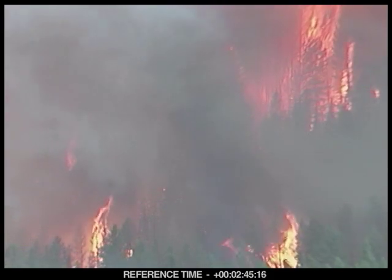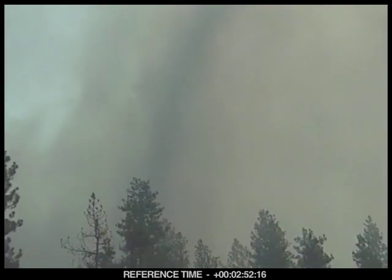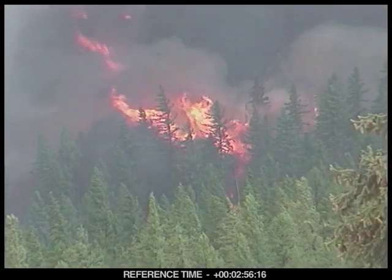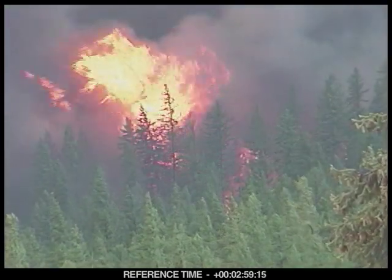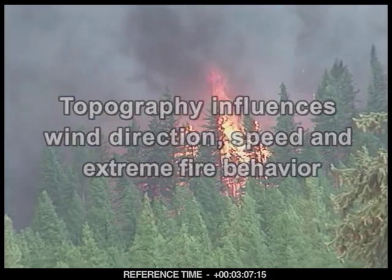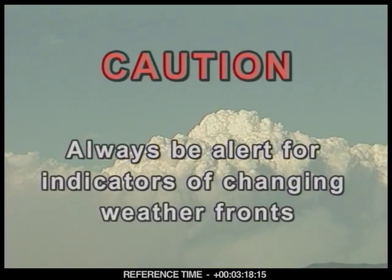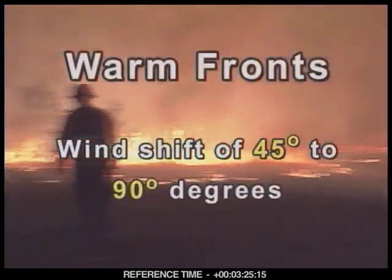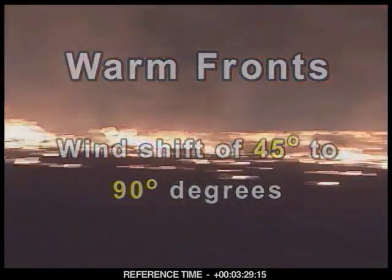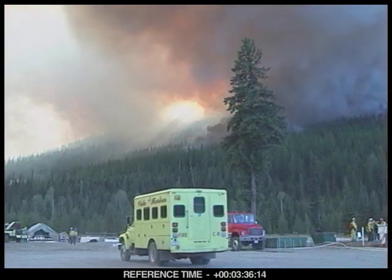As wind blows over topography it creates additional problems, causing air to become erratic. Wind crossing ridges or canyons creates swirling eddies, whirlwinds, and dust devils. Wind can pick up speed as it funnels through valleys and canyons. Incoming weather fronts can also bring dangerous wind changes — warm fronts may shift wind direction 45 to 90 degrees, while cold fronts can shift direction as much as 45 to 180 degrees, potentially turning the head of a fire in the opposite direction.